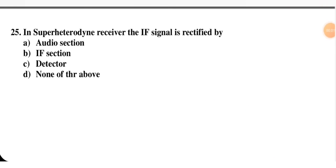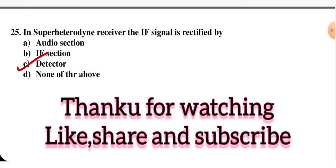This is the last question of this video. In a superheterodyne receiver, the IF signal is rectified by — audio section, IF section, detector, or none of these. The right option is C — the IF signal is rectified by the detector portion, meaning demodulation. I hope you liked this video. If you have any doubts, please write in the comment section. Thank you so much.